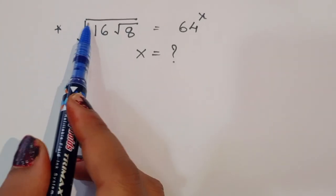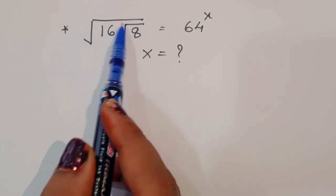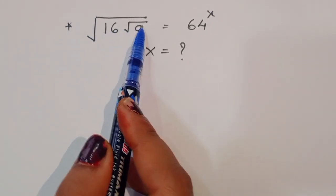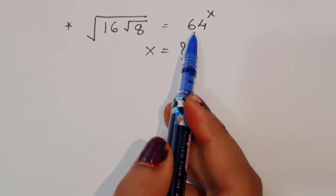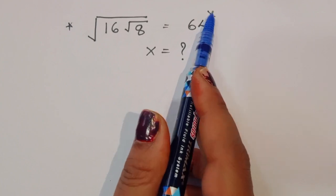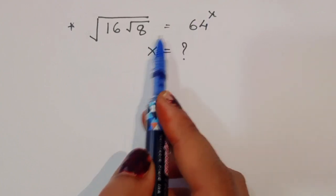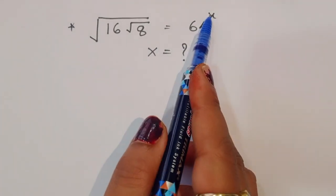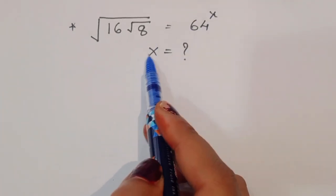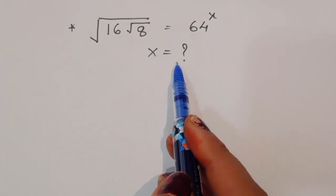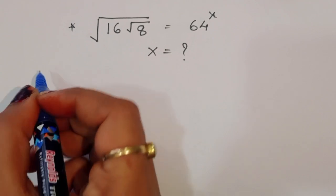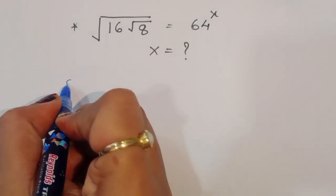The question is: given √16 · √8 = 64^x, we have to find out the value of x. Let's see the solution.